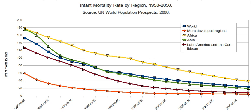Infant mortality is the death of young children under the age of 1. This death toll is measured by the infant mortality rate, which is the number of deaths of children under 1 year of age per 1,000 live births. The under-5 mortality rate is also an important statistic. Considering the infant mortality rate focuses only on children under 1 year of age, premature birth is the biggest contributor to the IMR.